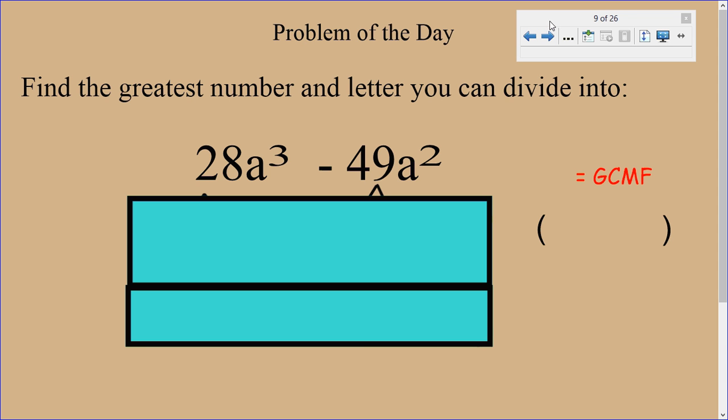Here's an example of what we're saying. Find the greatest number and letter you can divide into 28a to the third, or a cubed, minus 49a to the second, or a squared. So we want to find the GCMF.